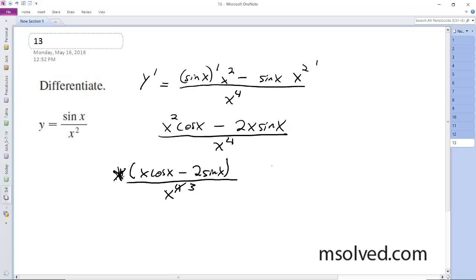this cancels out, and we end up with x cosine x minus 2 sine x over x to the third. That's it.